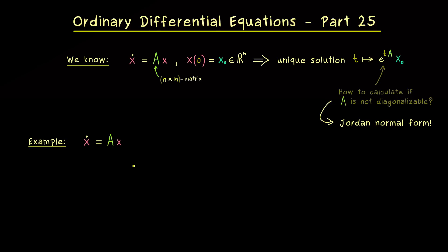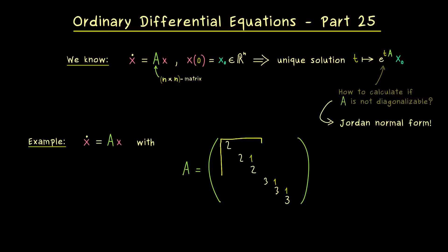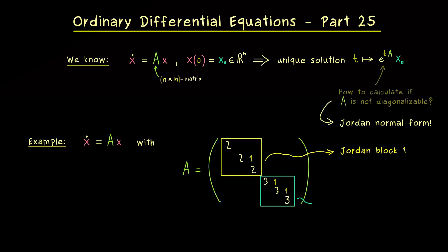To keep everything focused, we already assume that A is given in the Jordan Normal Form. This means A has a block diagonal structure, and it's also an upper triangular matrix, which means on the diagonal we find the eigenvalues of A. The only thing we are allowed to find above the eigenvalues are some 1s. We can put everything into two blocks: the first one corresponds to the eigenvalue 2, and the second one corresponds to the eigenvalue 3.